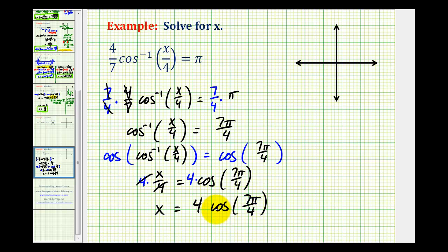Now let's determine the value of cosine seven pi over four. We could use a unit circle or sketch a reference triangle. Seven pi over four radians equals 315 degrees.